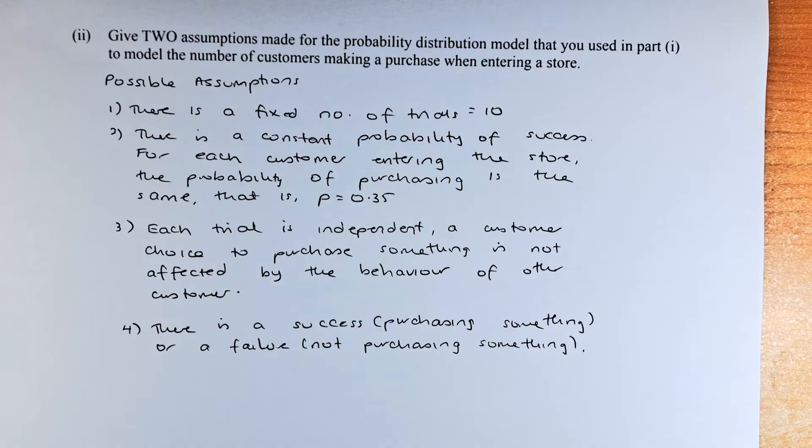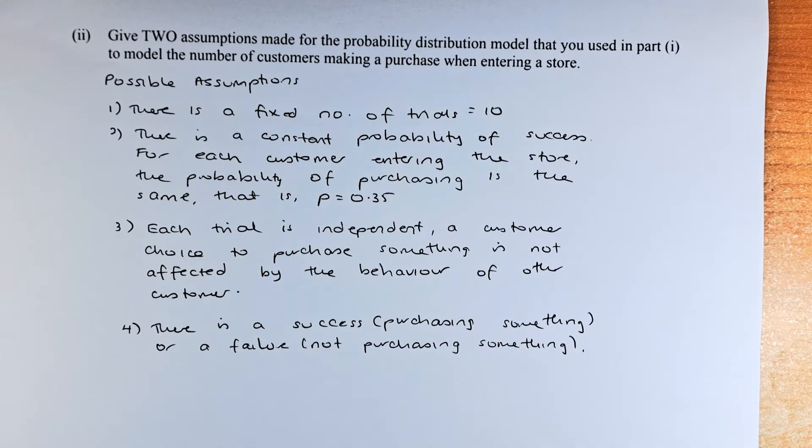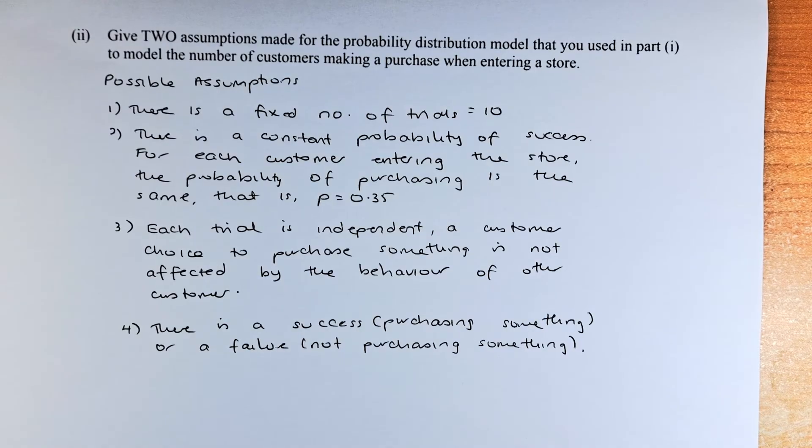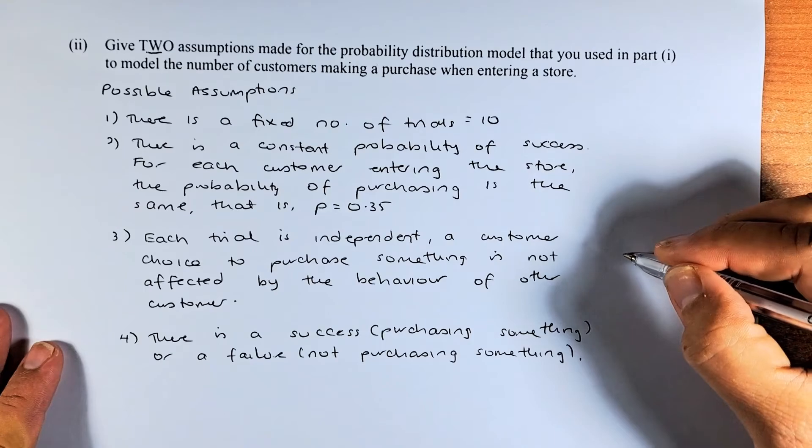Third thing, each trial is independent of each other. It means that a customer's choice to purchase something is not affected by the behaviour of another customer. So they are independent events. And last but not least, there is success or failure. Success means you purchase something, and failure means not purchasing something. You only need 2 assumptions. If you can get 2 of that, that will give you a merit.